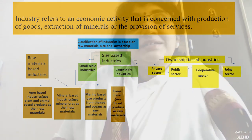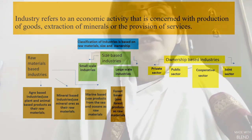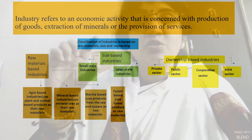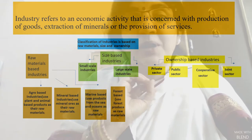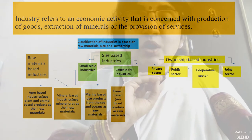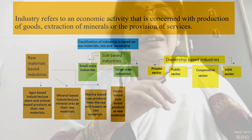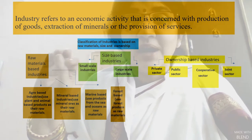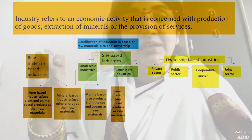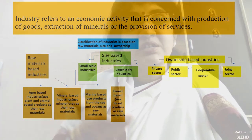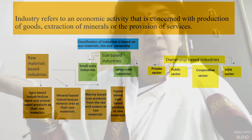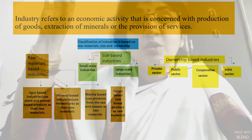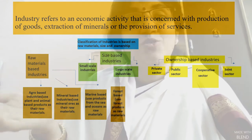When your mom packs lunch for you, she packs it in your tiffin box. But sometimes when she packs rotis or sandwiches, she uses a thin, glistening, shining paper. That is called aluminium foil. These aluminium foil wrappers are used as lunch packing material. Or think of copper cookware in the kitchen — copper-bottom milk boilers, copper-bottom cookers, copper aqua guards, and copper water bottles. Copper has become a part of our daily lives.